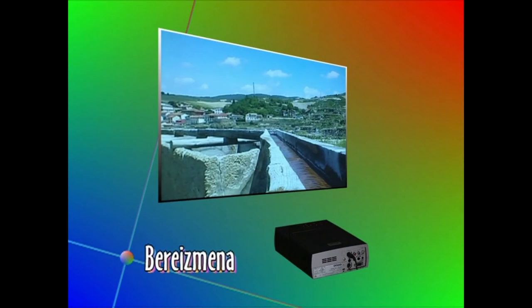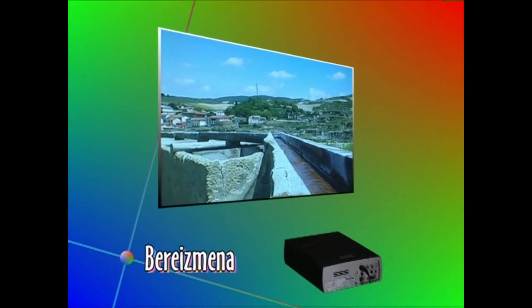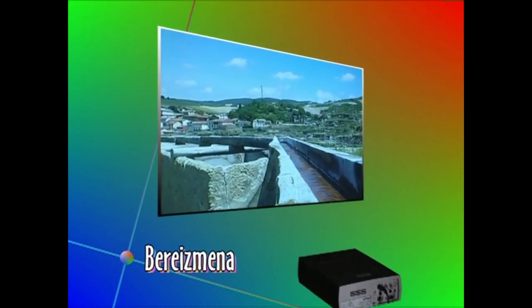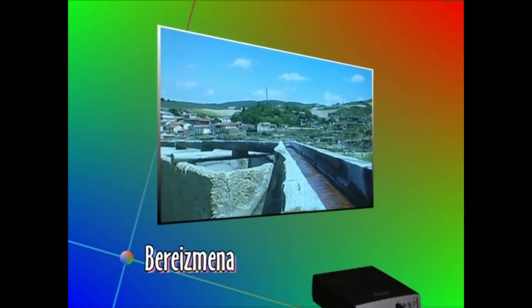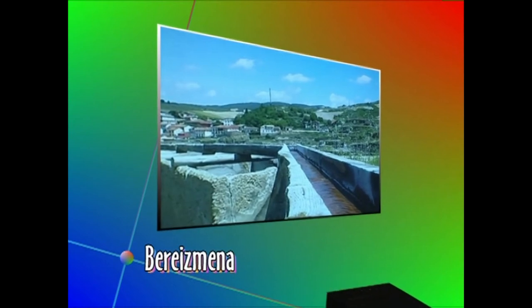Proiektatutako irudi baten bereizmena ANSI beteko piksel kopurua adierazten da. Zenbat eta handiagoa den piksel kopurua, orduan eta hobea izango da irudiaren kalitatea eta garbiago ikusiko da.